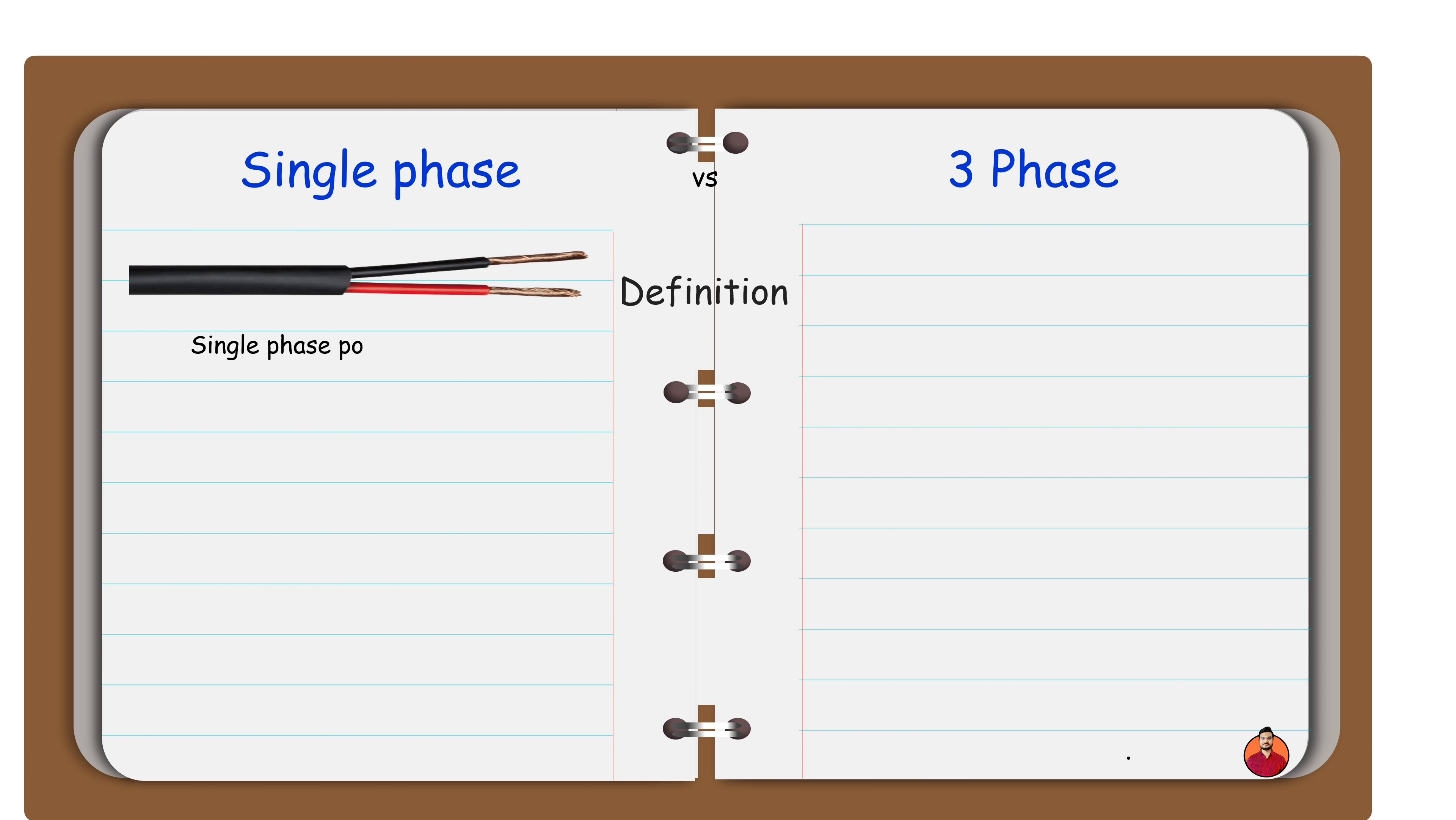A single-phase power supply operates using two conductors: phase and neutral. A three-phase power supply operates using three conductors, all are phases.